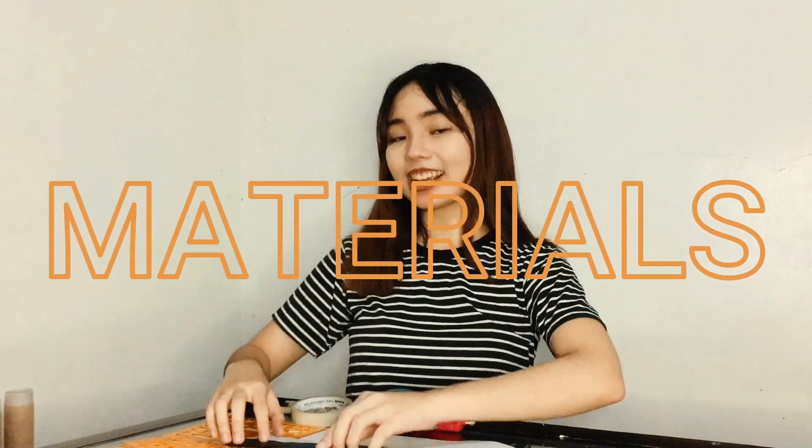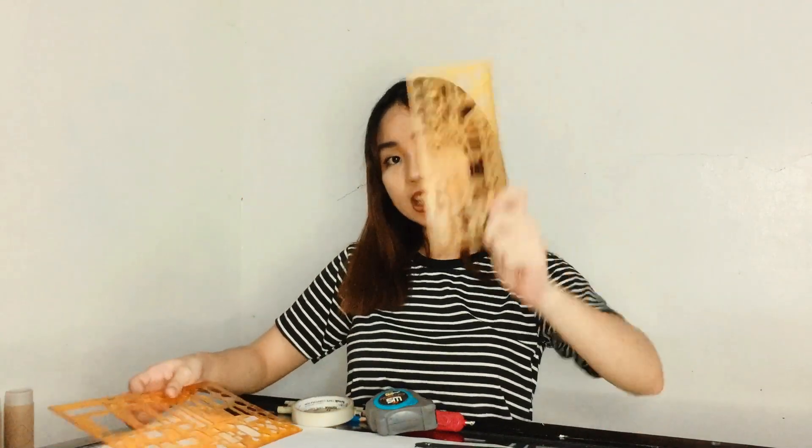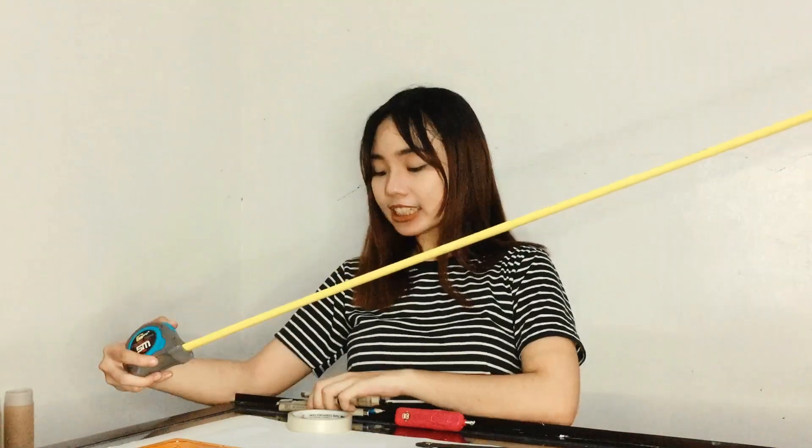So what I have here is, of course, a scale, which is a fan scale, furniture templates - one is to 100 and one is to 50 - and then papers, scratch paper, and then a metro. Of course, fineliners and pencils.